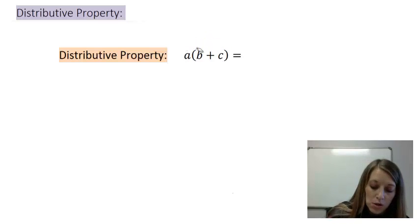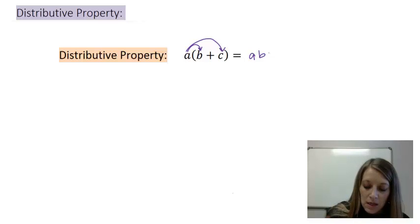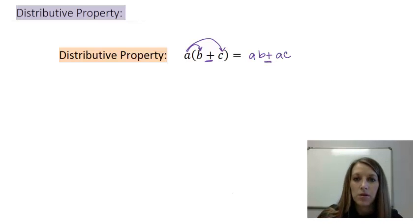So the way this works with my distributive property is if I feed the dog, then I have to feed the cat as well. So I'd have to take A times B, giving me AB, and A times C, giving me AC. I have addition in the middle, so I keep my addition in the middle here.